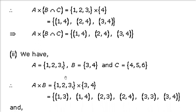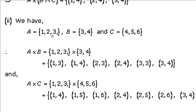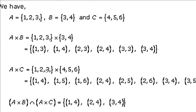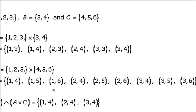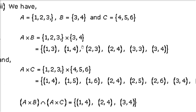The second one: find (A cross B) intersection (A cross C). A cross B = {(1,3),(1,4),(2,3),(2,4),(3,3),(3,4)}. A cross C = {(1,4),(1,5),(1,6),(2,4),(2,5),(2,6),(3,4),(3,5),(3,6)}. When we take the intersection, the common ordered pairs are (1,4), (2,4), and (3,4). So the result is {(1,4),(2,4),(3,4)}.